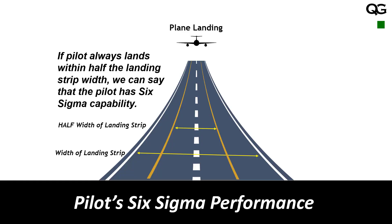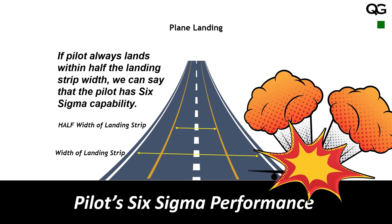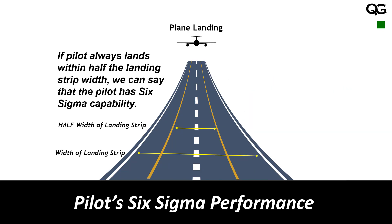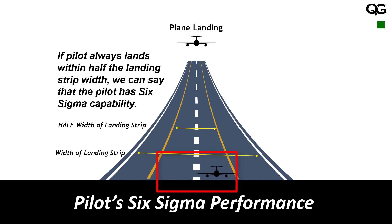To understand Six Sigma, let's take the example of a plane landing on a strip. For the plane to be safe, it has to land on the landing strip — you don't want it to land outside. But when we talk of Six Sigma, the intention is that the pilot should be able to land the plane in half the width of the landing strip most of the time, not using the full width. If the pilot can do that, we say the pilot has Six Sigma performance.